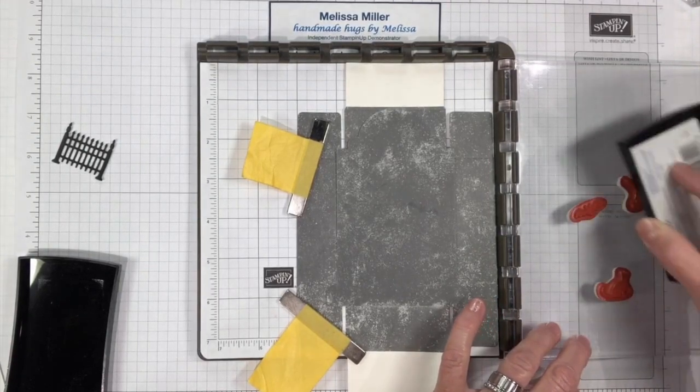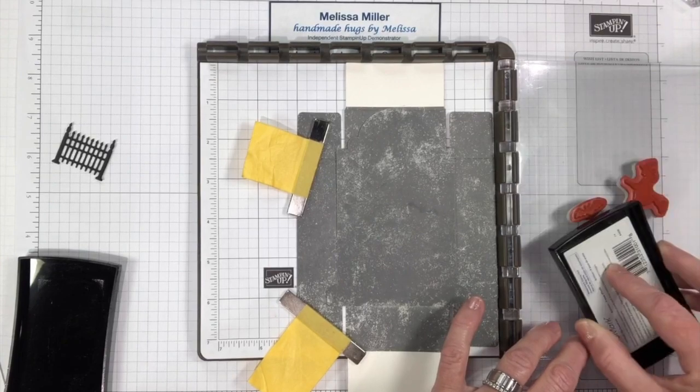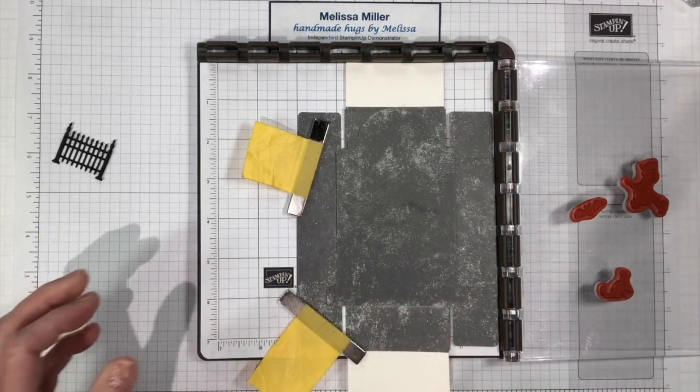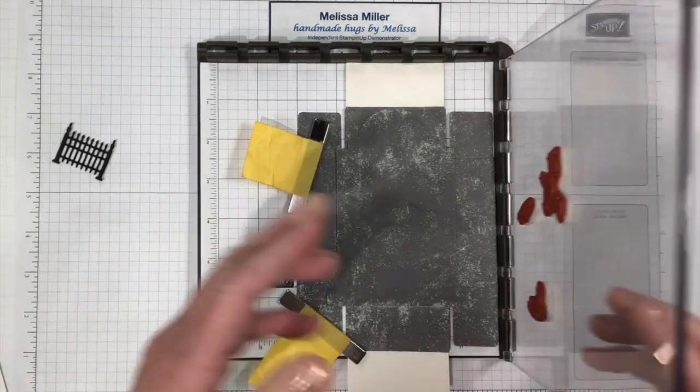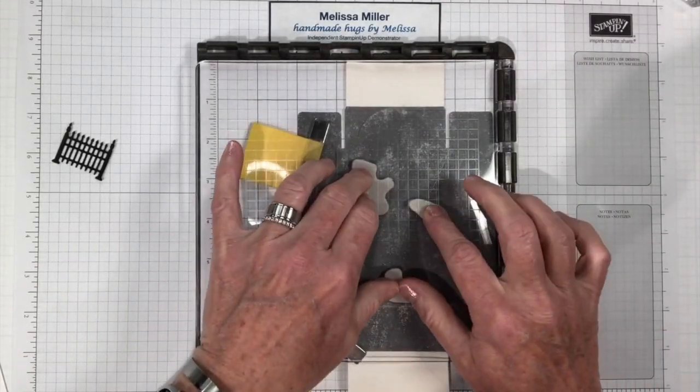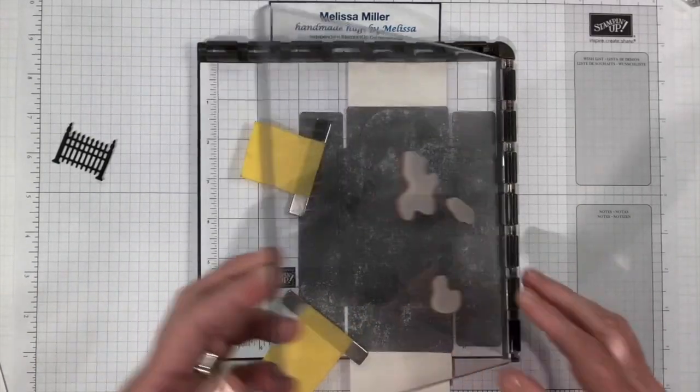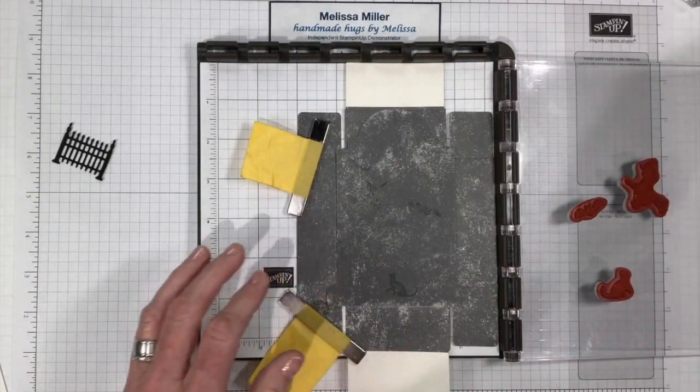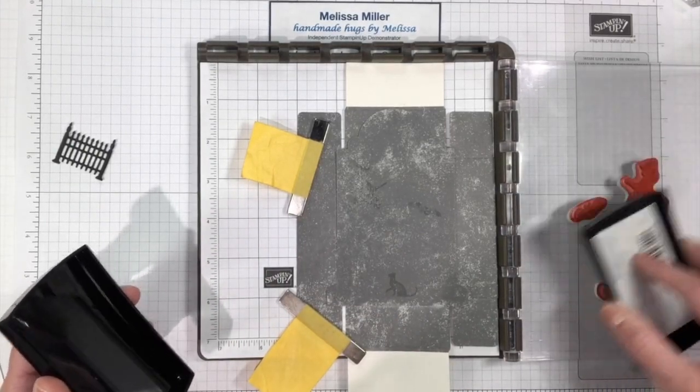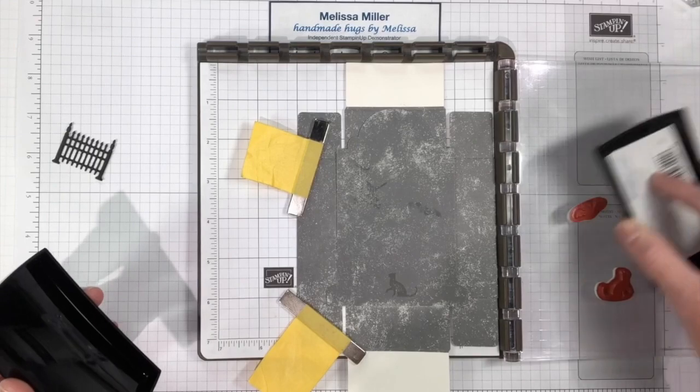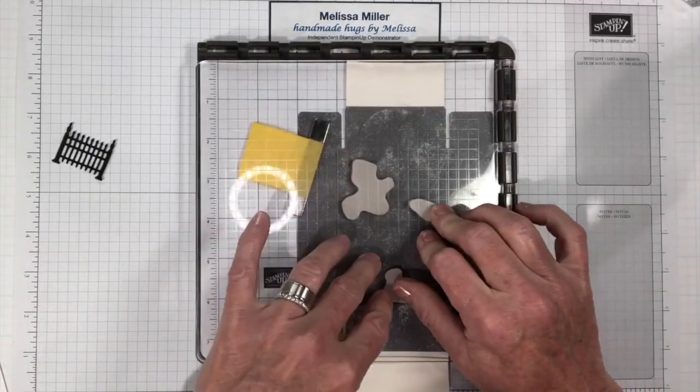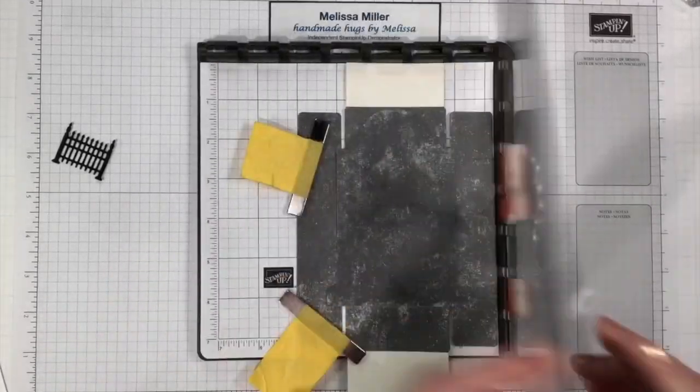And we will ink up our images with the Versamark. This is just your clear sticky ink that you use when you are heat embossing. So we will be heat embossing with black. I'm going to go ahead and stamp my images, and because we're doing more than one here I think I'm going to give it another quick inking. Press it down again.